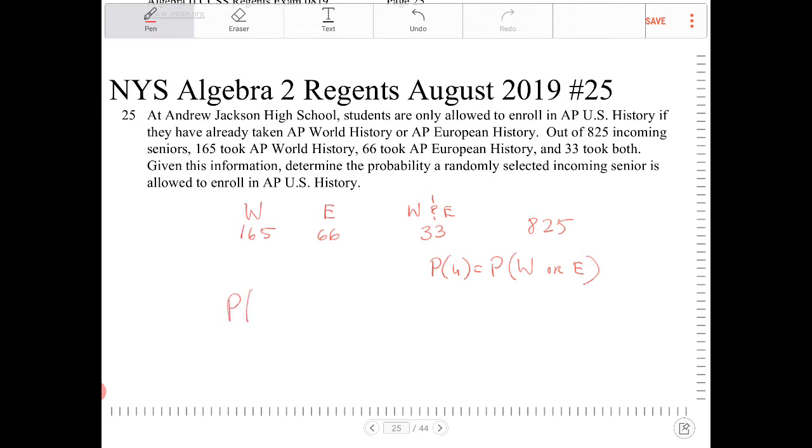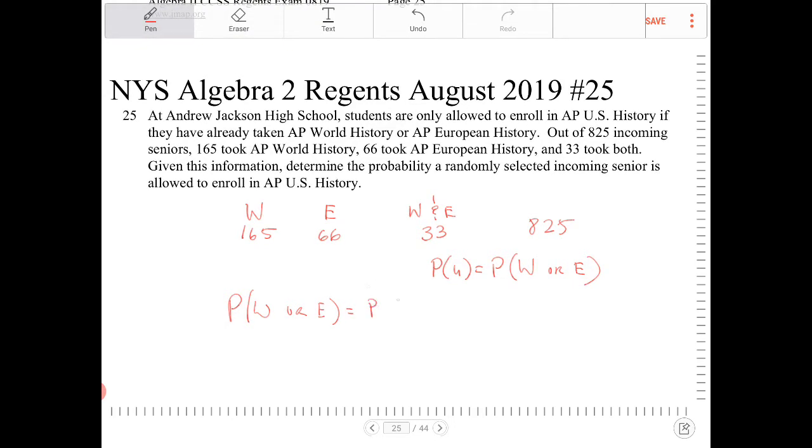So knowing this fact, P, W, or E will be equivalent to, because there is this condition and this overlap. The formula for calculating the probability of students who have taken World History or European History is not simply the addition of these two probabilities. But we have to also subtract the probability of students taking both subjects together. So W and E.